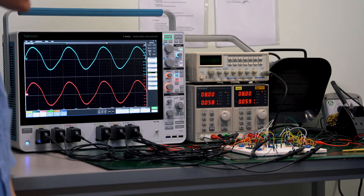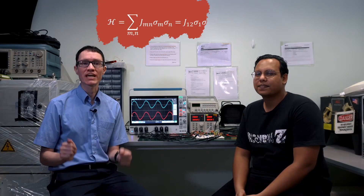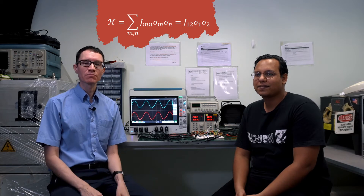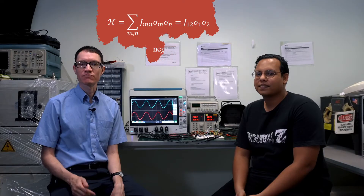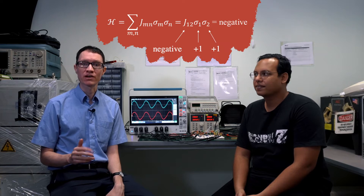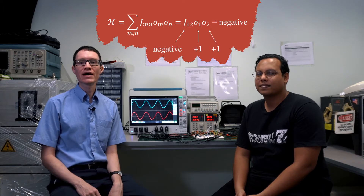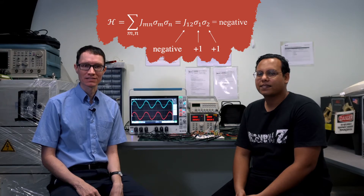It looks like these two oscillators are phase locked now. The Hamiltonian of an Ising computer contains connections J between each cell. In the simplest Ising computer with just two cells, we only have J12. Resistive coupling creates a negative J. If J is negative and both oscillators are in phase with one another, or plus one, then the Hamiltonian H is negative and it's minimized. The system has naturally minimized the Hamiltonian.